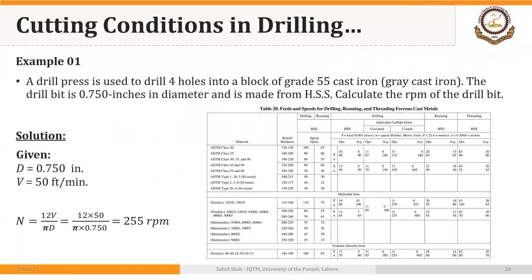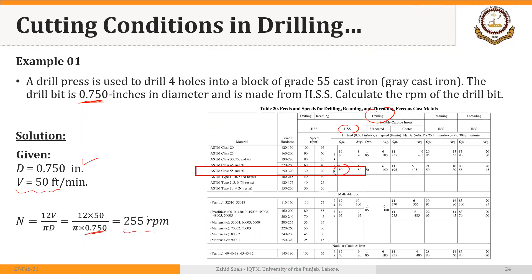Let's solve an example. A drill press is used to drill holes into a block of grade 55 cast iron — that is gray cast iron. The drill bit is 0.750 inches in diameter and is made from high speed steel. Calculate the RPM of the drill bit. The diameter of the drill bit is 0.750 inches, and the recommended cutting speed for a high speed steel twist drill is 50 feet per minute for drilling. Using N = 12V / (π·D), the recommended RPM is 255, and we select the closest available value on our machine.